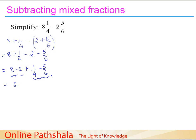To subtract the two fractions, the denominators are different, so we need to convert them to the LCM of 4 and 6, which is 12. We multiply 1/4 by 3/3 to get an equivalent fraction over 12, and multiply 5/6 by 2/2 similarly.